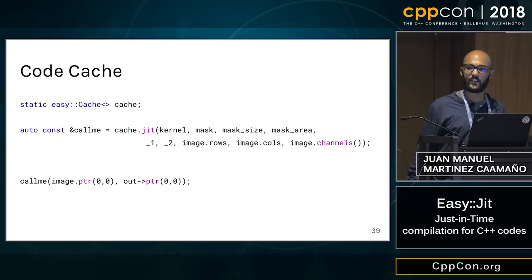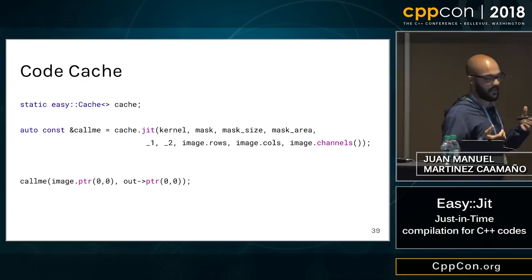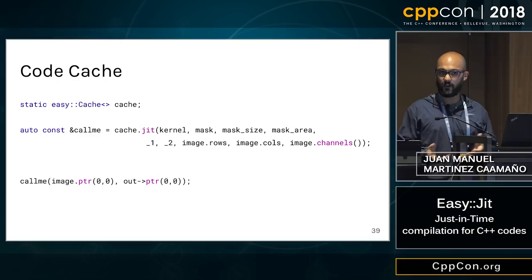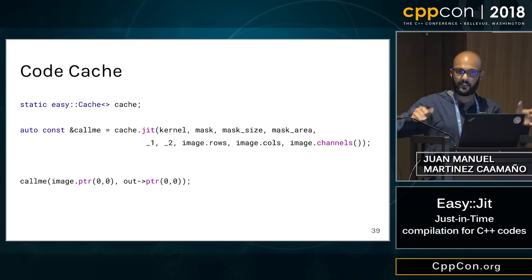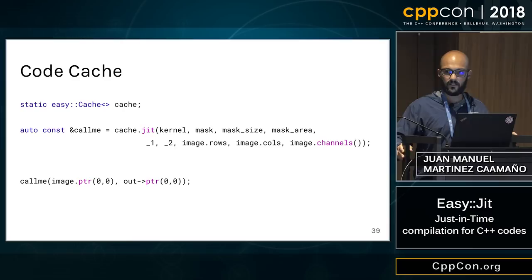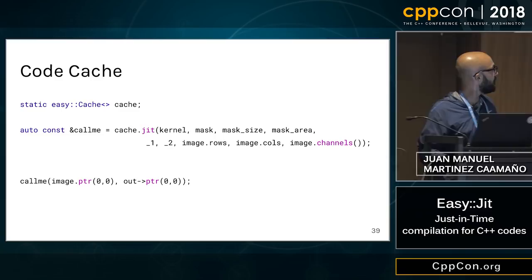Why not have a code cache? The context object is comparable and hashable, so I implemented a cache as a std::unordered_map. If no template parameters are specified, it uses the context as the key. So if later we call EasySheet for a function with the same parameters and it's already in the cache, it avoids recompilation and returns the compiled object directly.